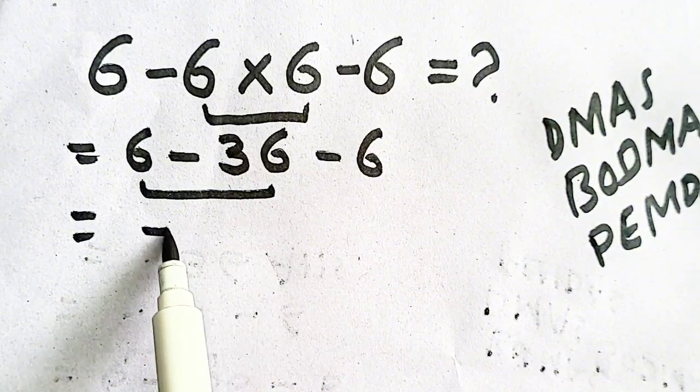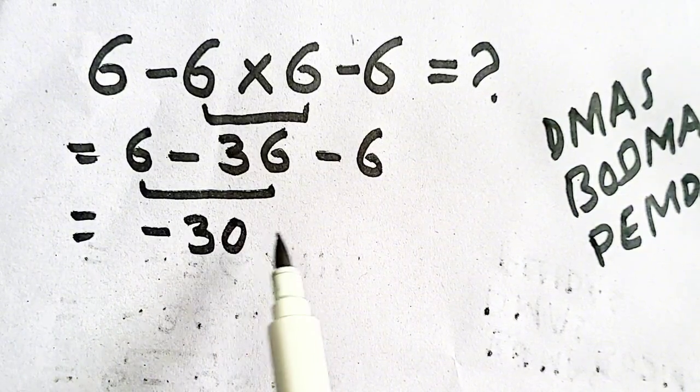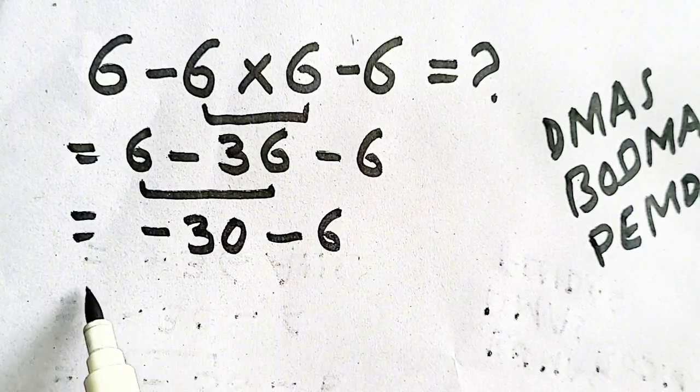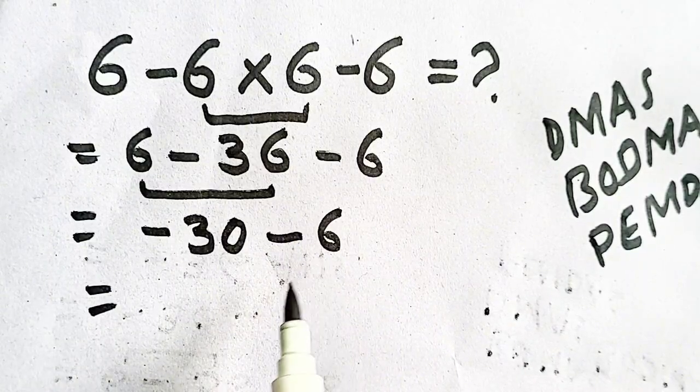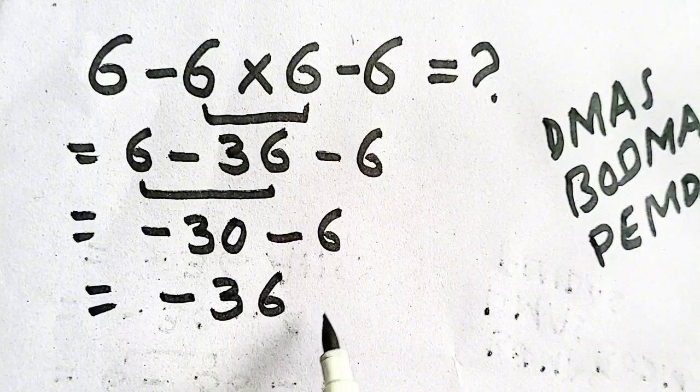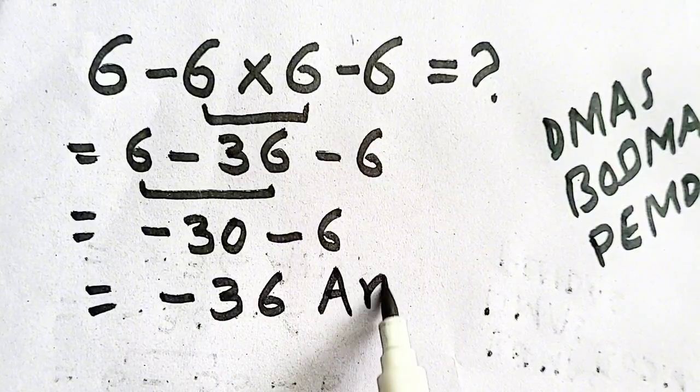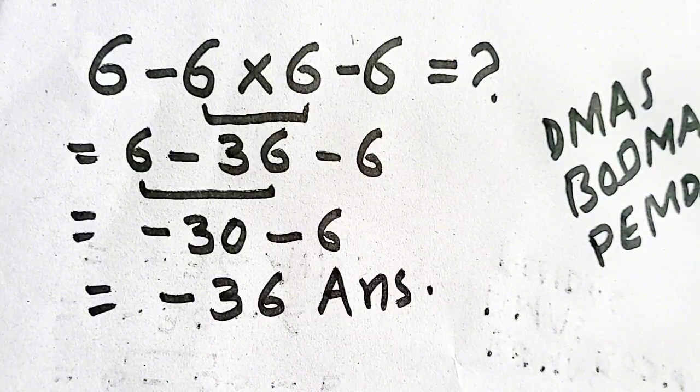Six minus thirty-six equals minus thirty, and minus thirty minus six equals minus thirty-six, which is our answer. Thank you.